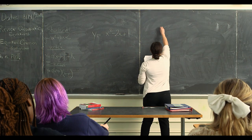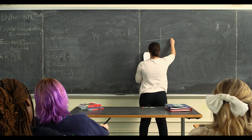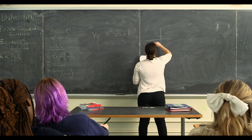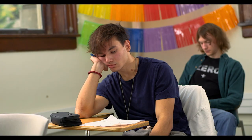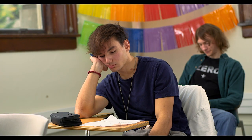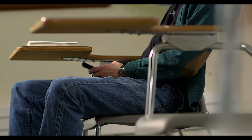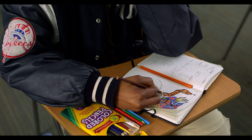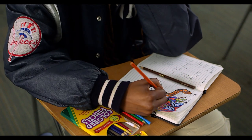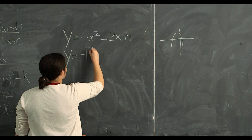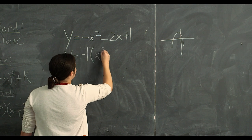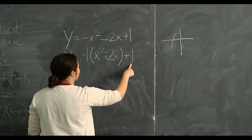Let me start by roughly drawing this parabola. A is negative, so it is facing down. Our first step to get it into vertex form is getting an a and k value out. We can do this by extracting the negative. We'll have x squared plus 2x inside the parentheses, and plus 1 as our k value placeholder.